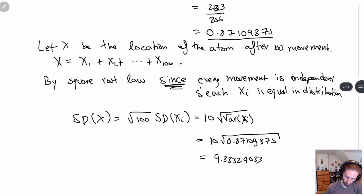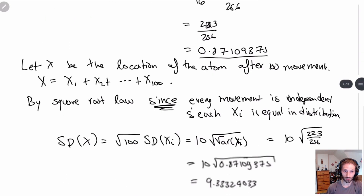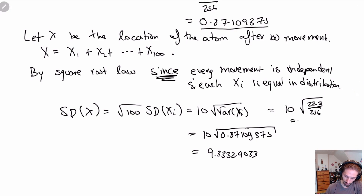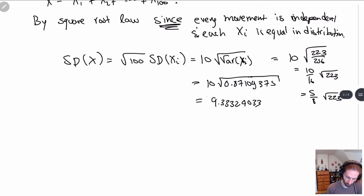Another way to express this: 10 times √(223/256). Since 256 = 16², this simplifies to (10/16) · √223. Both forms are acceptable. Remember you need at least four decimal places and please round correctly. So that's question one — we'll look at question two in the next video.